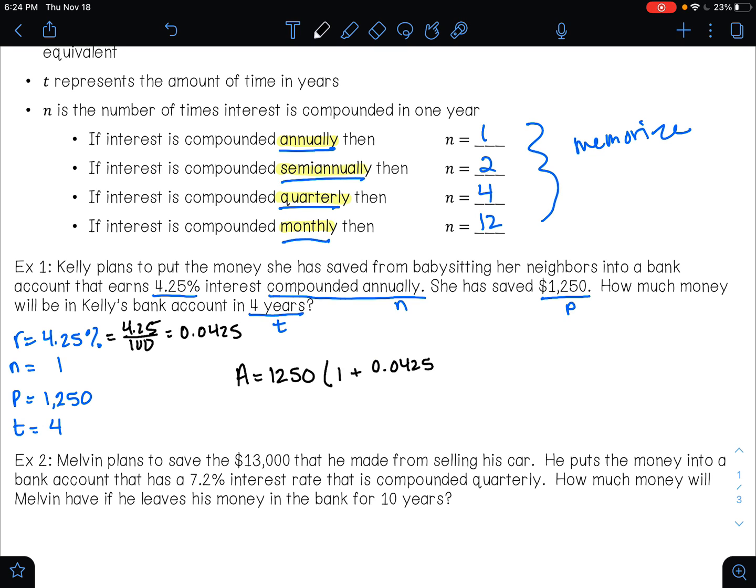divided by n. n is 1. And then this is being raised to the 1 times 4 power. Now I know this might look a little overwhelming. Maybe we're having a little bit of anxiety looking at this. But I'm going to show you how to do this in your calculator in one step. And it's going to be super easy. So do not stress out. I'm going to show you how to do this nice and easy.